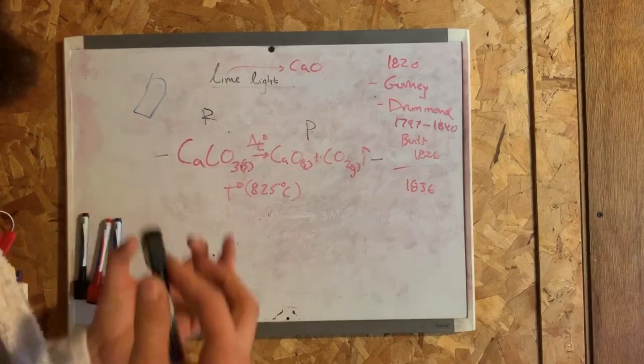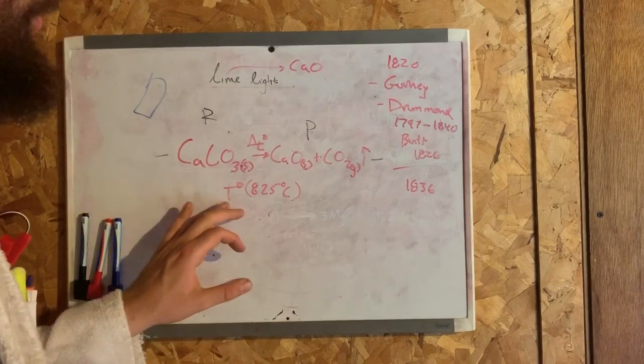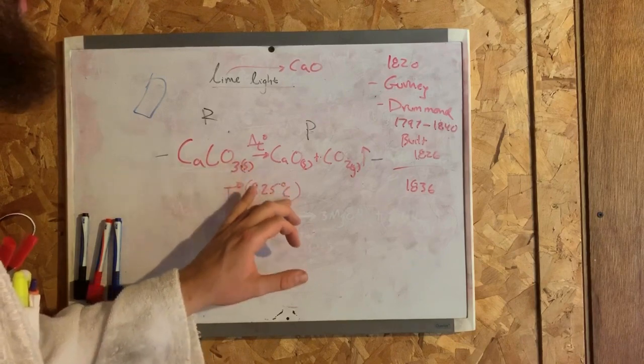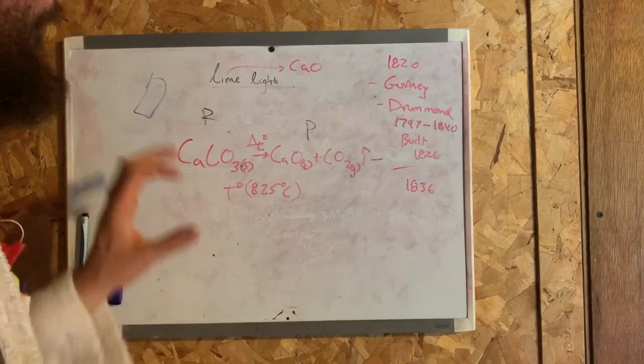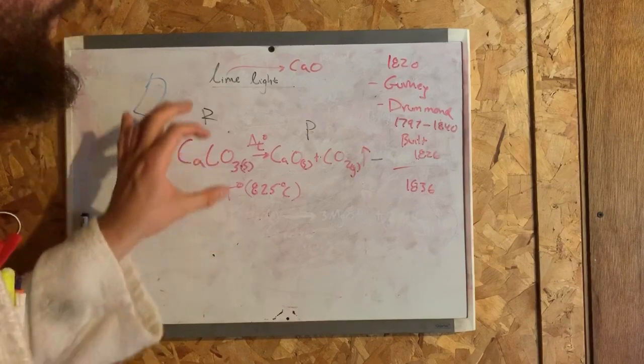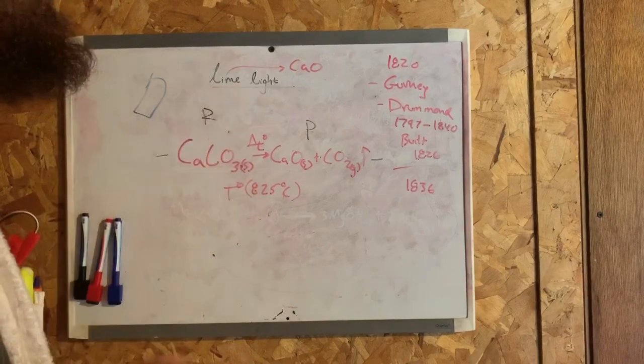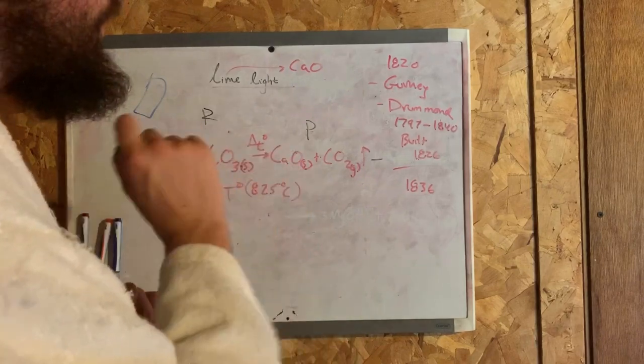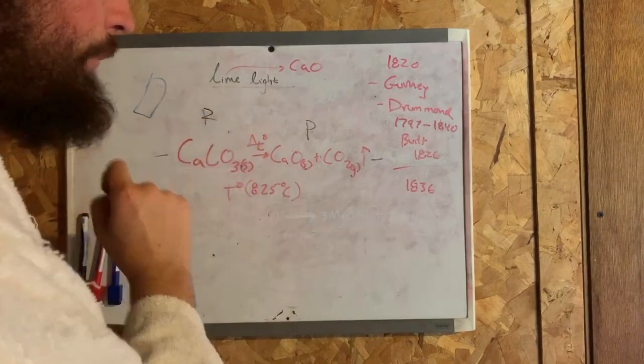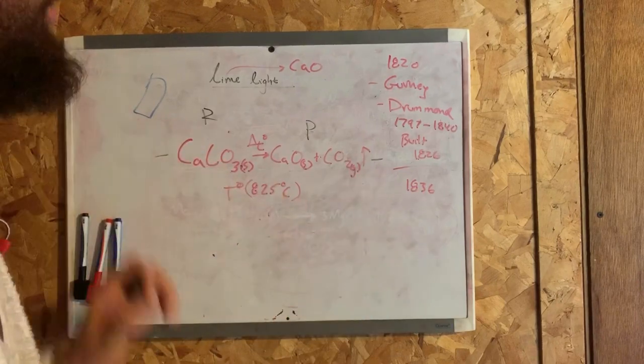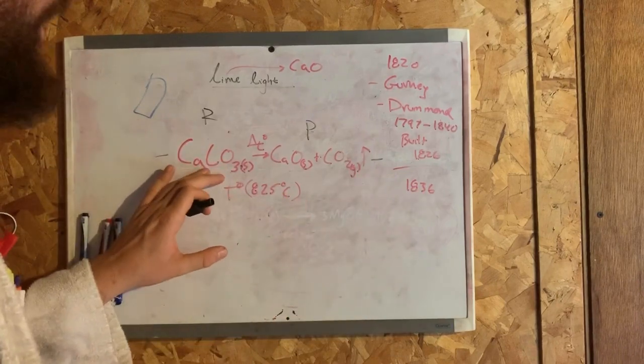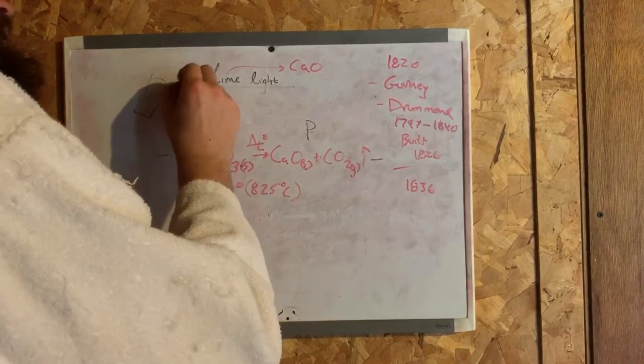To do this, I have to heat the chalk up to temperatures of 825 degrees Celsius. This is a process called thermal decomposition. The calcium carbonate through thermal decomposition is going to give us products of calcium oxide, which is lime, and carbon dioxide.